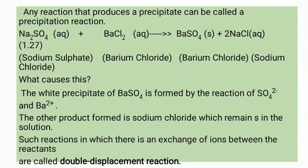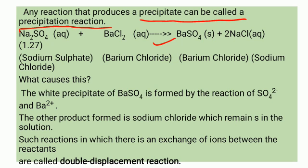Any reaction that produces a precipitate can be called a precipitation reaction. The equation is: Na₂SO₄ + BaCl₂ → BaSO₄ + 2NaCl. The white precipitate of barium sulphate is formed by the reaction of SO₄²⁻ ions and barium ions.